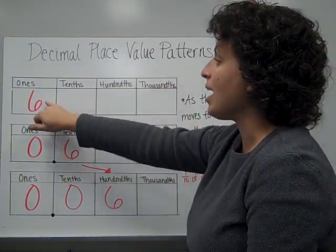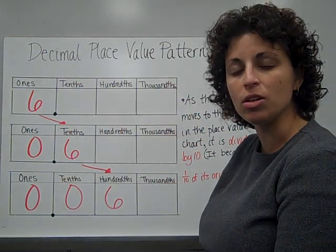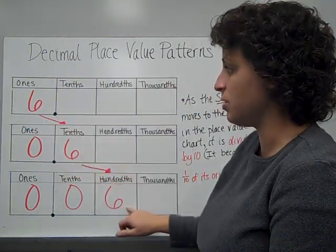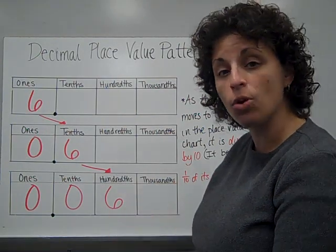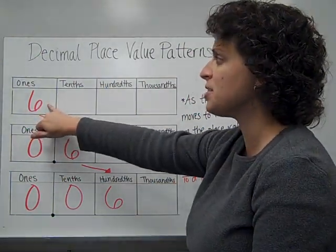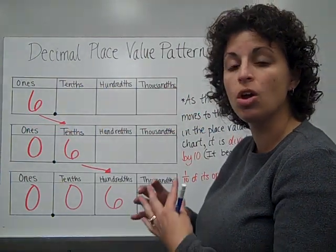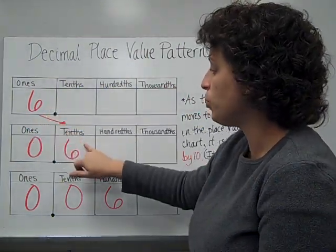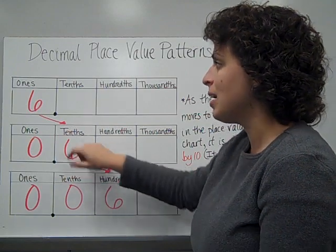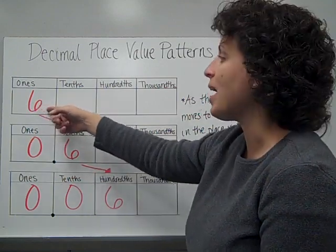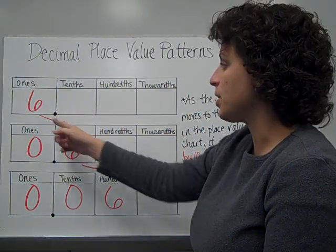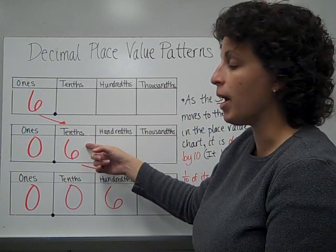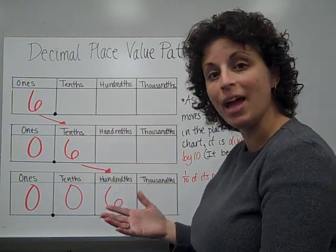As we move to the right in the place value system, the value of the digit — in this case a six — is going to get smaller. This is six ones, which would be six wholes. If you move the six back to the tenths place, it is not the same value as it was before. It has become smaller, because as you move to the right, you are dividing the value by ten.